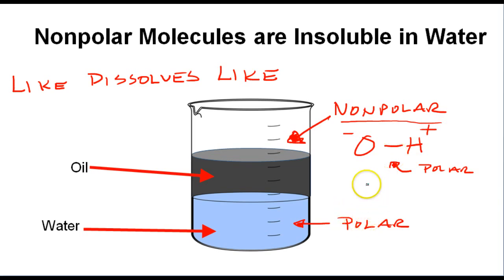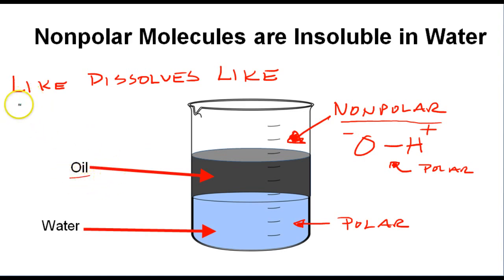Think of it this way: if you eat a burger and get a grease spot on your t-shirt, then wash it with water, the stain remains — because you're trying to dissolve a non-polar grease stain using water, which is a polar solvent. You'd have to take it to a dry cleaner, who uses non-polar solvents to dissolve that non-polar grease stain. The general rule of thumb for the solubility of molecules is: like dissolves like. And that's solubility in a nutshell.